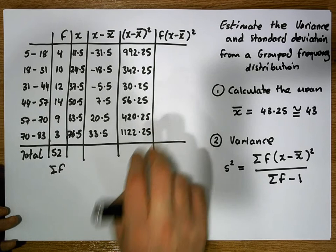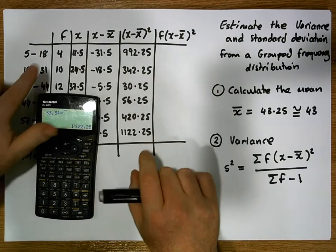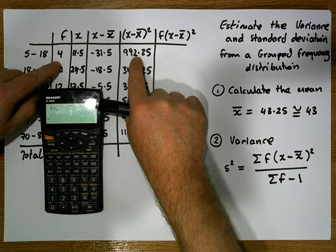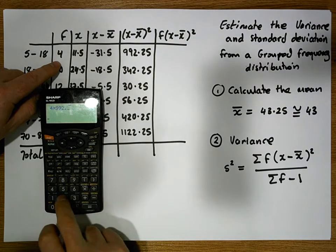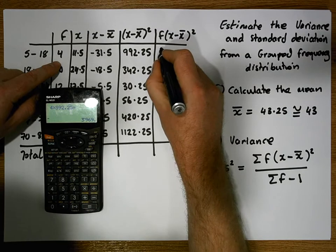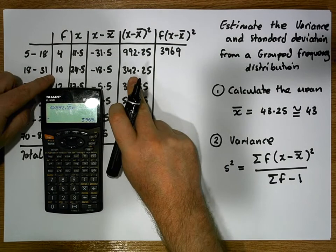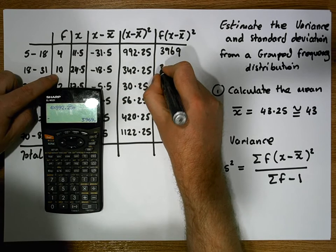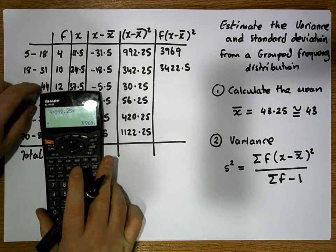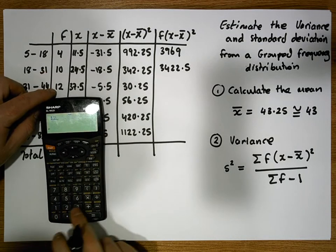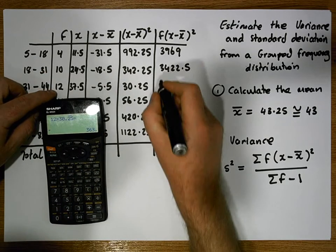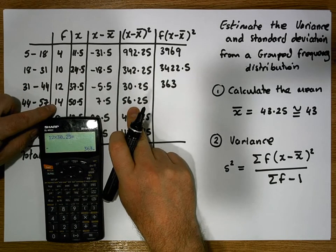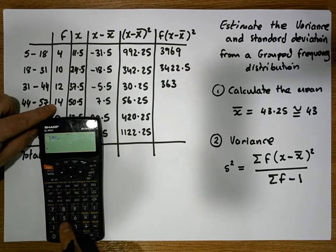The first value is the f value, which is 4 multiplied by 992.25, giving us 3969. The next value is 10 times 342.25, which is 3422.5. The next value is 12 times 30.25, giving us 363. The next value is 14 times 56.25, giving us 787.5.